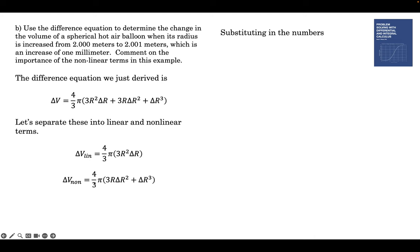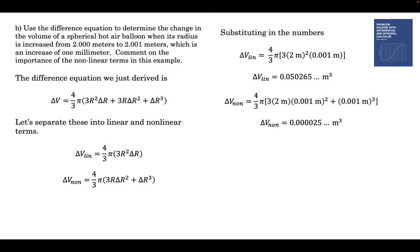So now we can plug in the numbers to get the relative sizes. The linear term, 4 thirds pi r squared delta r. Punching in the numbers, 0.05265 cubic meters. The nonlinear term is 3r delta r squared plus delta r cubed. And that, not surprisingly, is a lot smaller, because the change is so small. So in the fifth decimal point, if we add these two together, we get that change in volume.